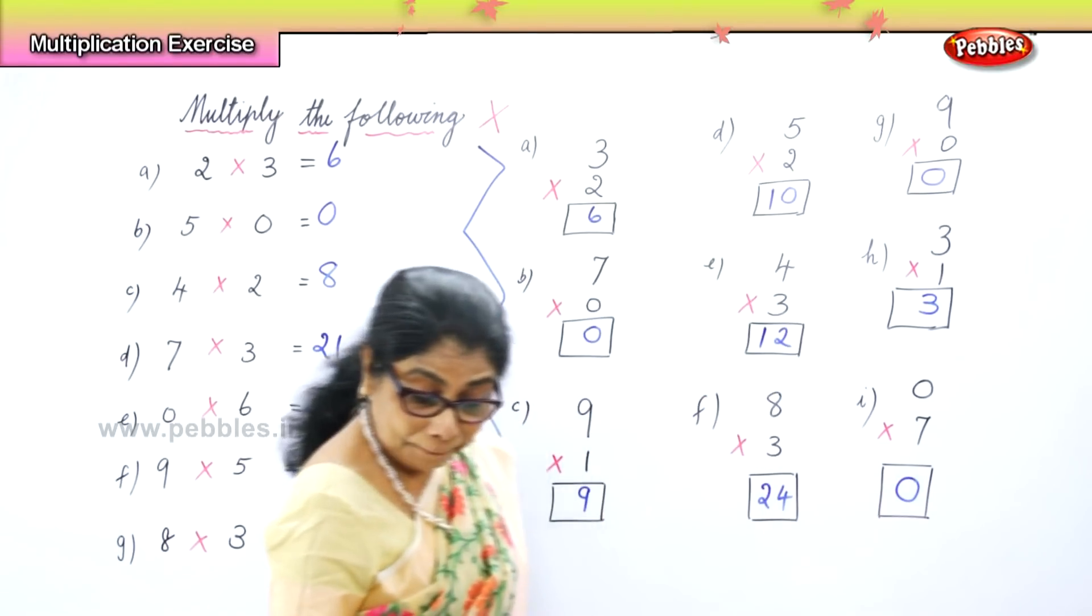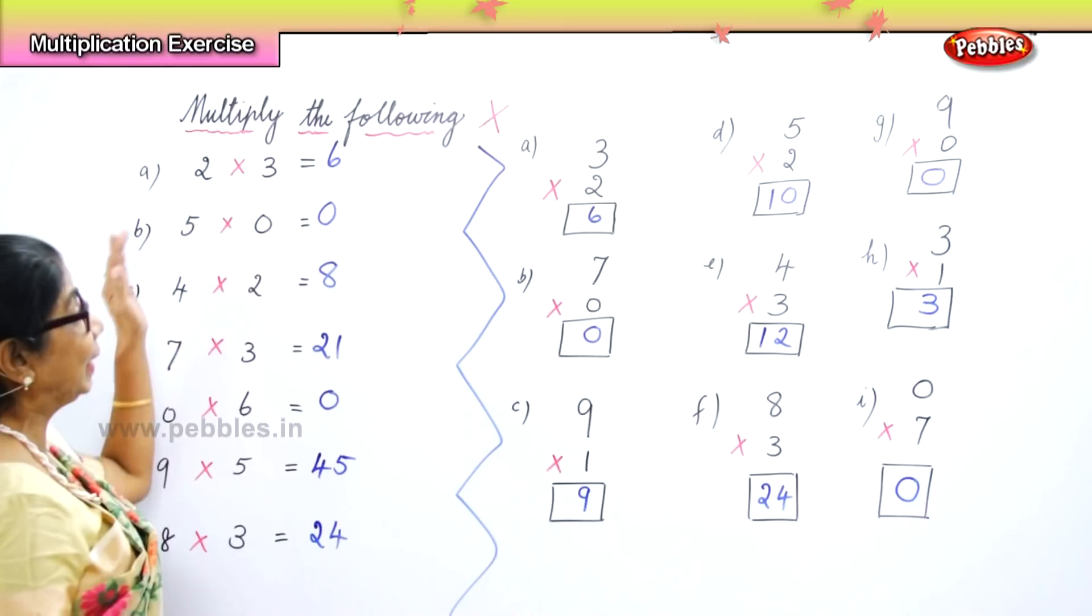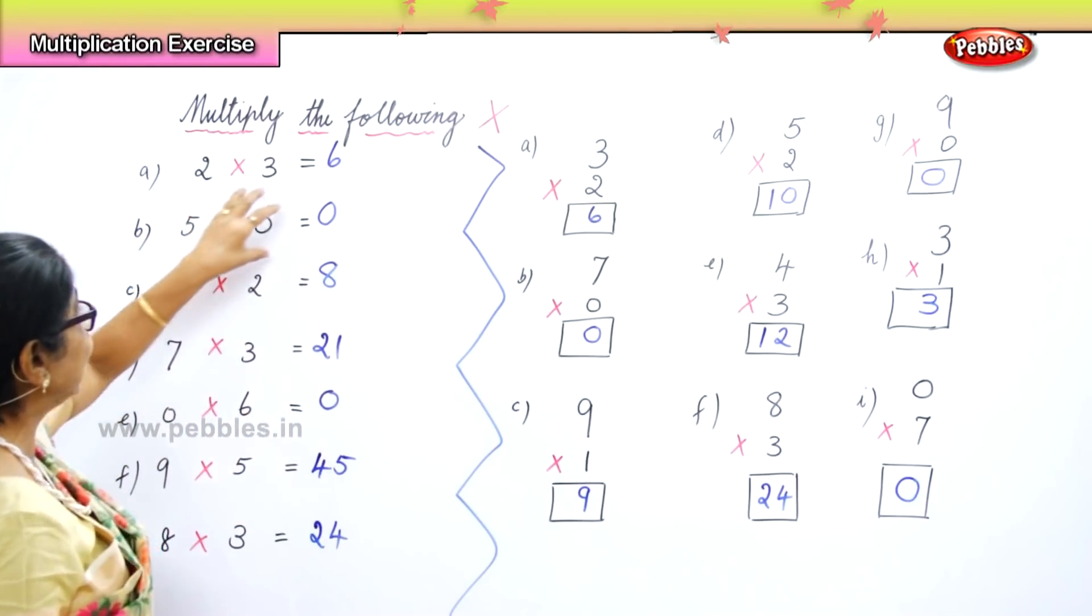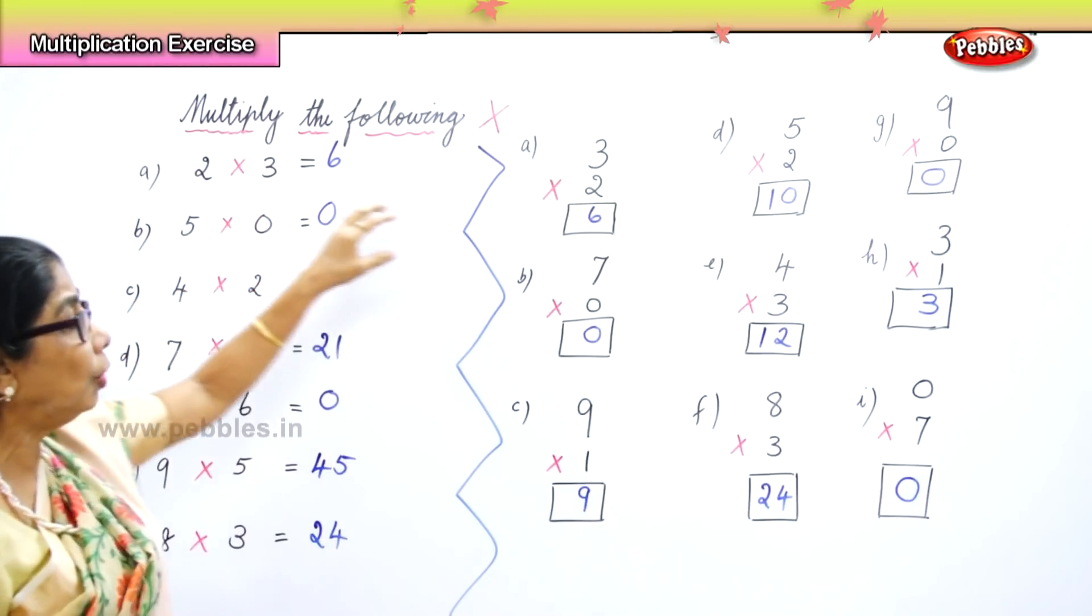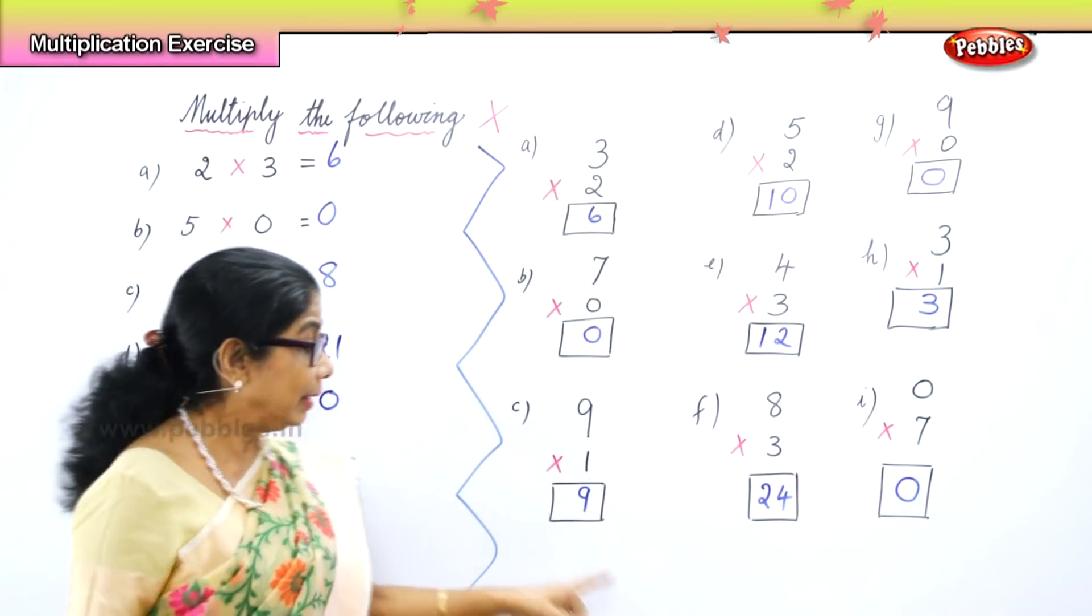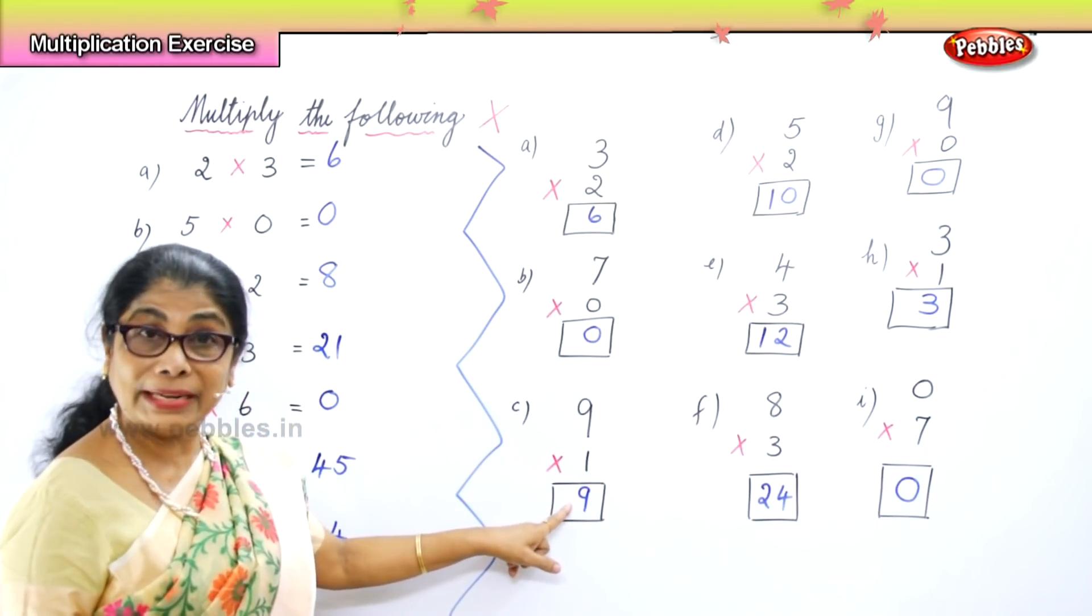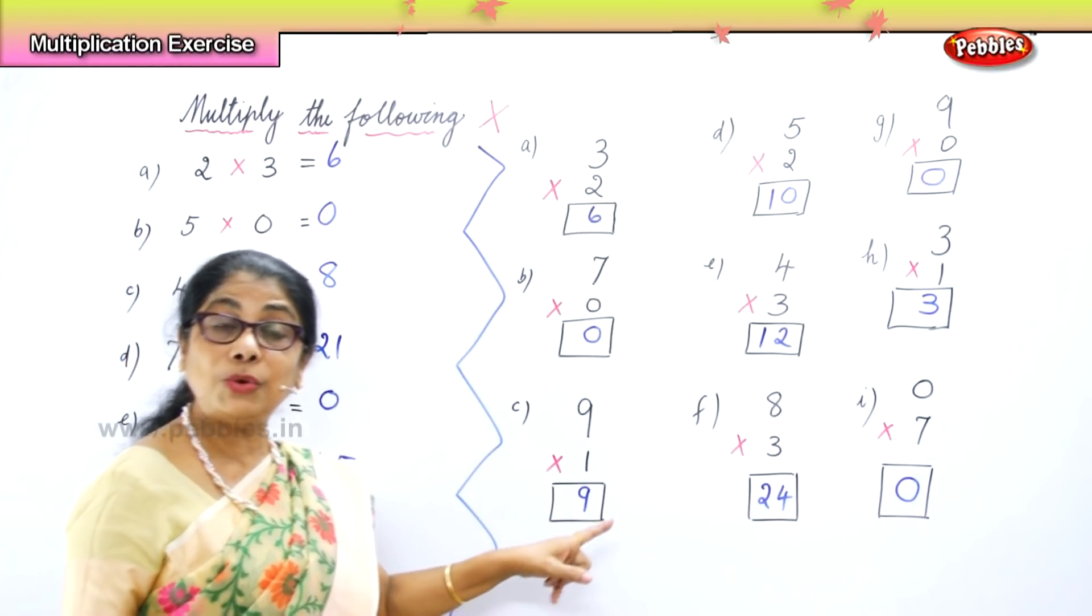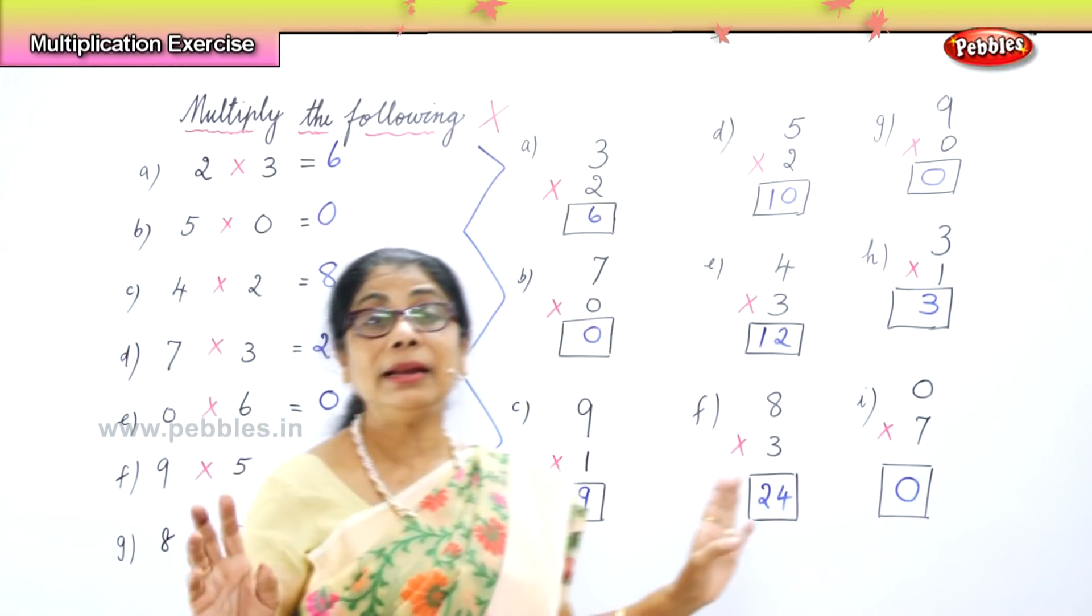So we learned simple multiplication, whether horizontal or vertical. Any number into zero or any zero into the number, it gives you zero itself. Any number into one, the number itself. One into nine or nine into one, all single number nine.